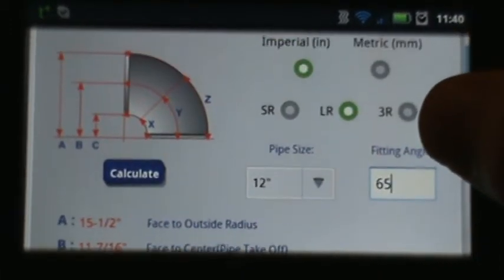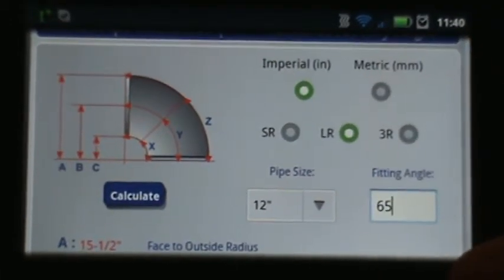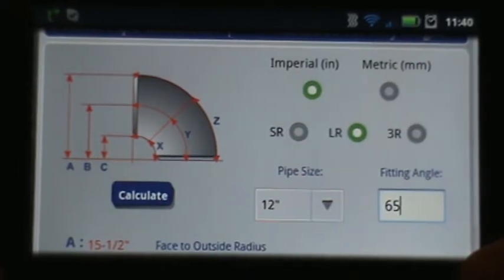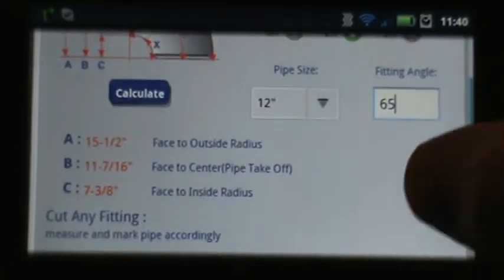If you scroll back up you'll see on the diagram how X, Y, and Z relate to the pipe when we need to cut a custom fitting.